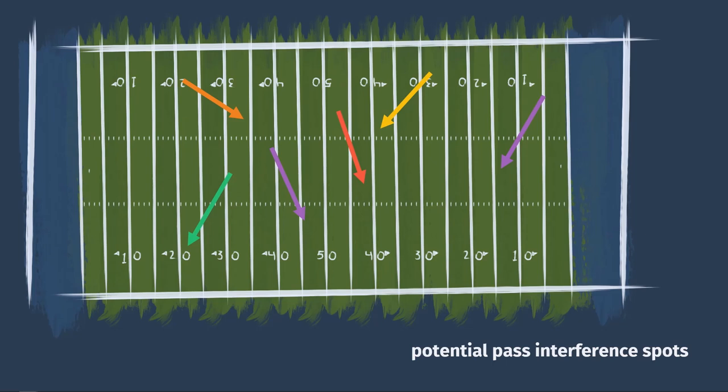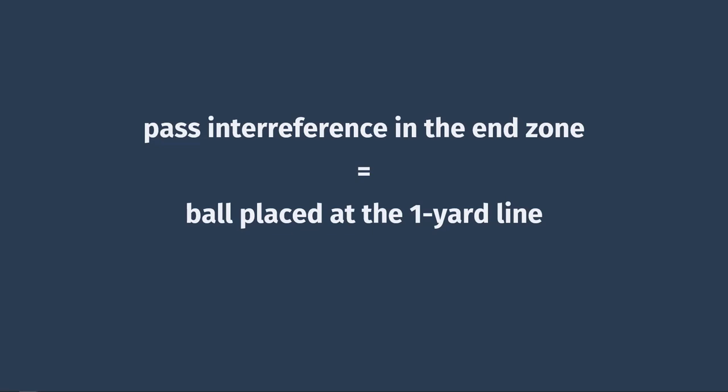An interesting situation arises with defensive pass interference in the end zone, or any foul that would otherwise move the offense into the end zone — do they get a free touchdown? No — there are no free touchdowns or automatic scoring in football. If pass interference is committed in the end zone, the ball is placed on the one-yard line, which, while not a guaranteed score, is about as close as you can get. Also, if a team is close to the end zone and a foul is committed, rather than receiving the usual yardage, the ball may be moved half the distance to the goal line instead.